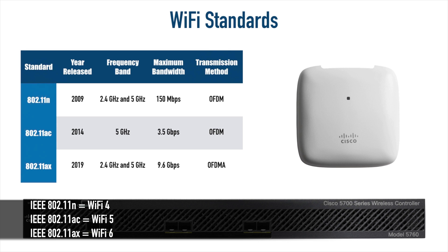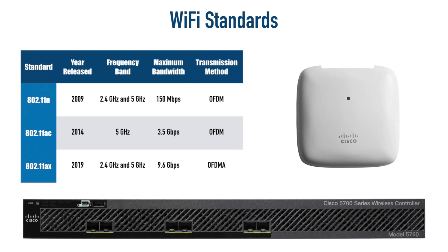Look at the bandwidths. We're going from 150 Mbps of theoretical maximum throughput with .11n all the way up to a whopping 9.6 Gbps with Wi-Fi 6 or 802.11ax. The transmission methods in .11n and .11ac are both OFDM — we're going to be talking about that. There's an enhancement to OFDM called OFDMA that's being used by Wi-Fi 6. Let's go back in time just a little bit to set the stage.